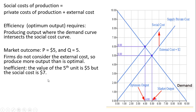This is inefficient. Look at the fifth unit of output: the value of the fifth unit, walking up to the demand curve, shows the maximum willingness to pay is $5. So a consumer values this fifth unit at $5. But the actual cost — considering all costs, private and external — walking up to the social cost curve, is $7.